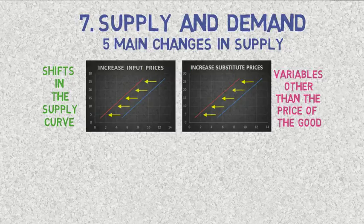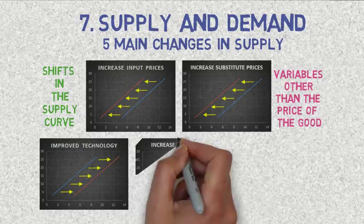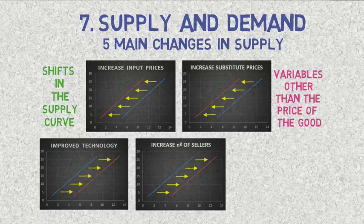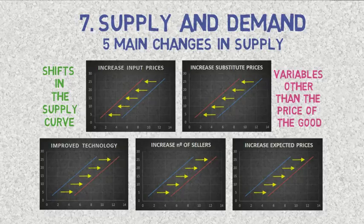There are cases where we find the opposite situation. When two products are complements in production, such as beef and leather, the increase in the price of the complement leads to an increase in the production of a given good. When technology improves, farmers are able to produce more with the same amount of input, so the supply curve shifts to the right. When the number of sellers increases — as often happens when a country's market is opened to international companies — the supply curve also shifts to the right. If a producer is informed that the price of his product will go up, he starts to produce more and so does everyone else, shifting supply to the right, but only if the product can be stored and sold later. This is the end of part one.